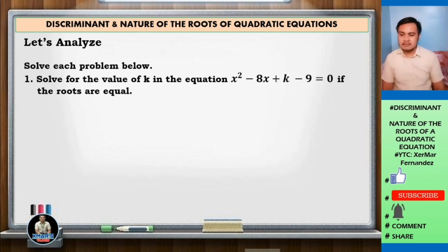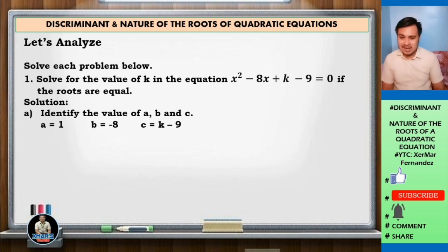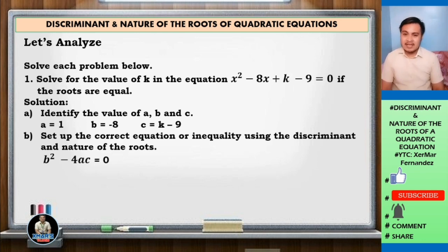Our solution: letter a, identify the value of a, b, and c in the equation. a equals 1, b equals negative 8, and c equals k minus 9. k belongs to the constant term, so the value of c is k minus 9. Next, set up the correct equation using the discriminant. The discriminant is b squared minus 4ac, and since the roots are equal, the discriminant equals 0, so b squared minus 4ac equals 0.